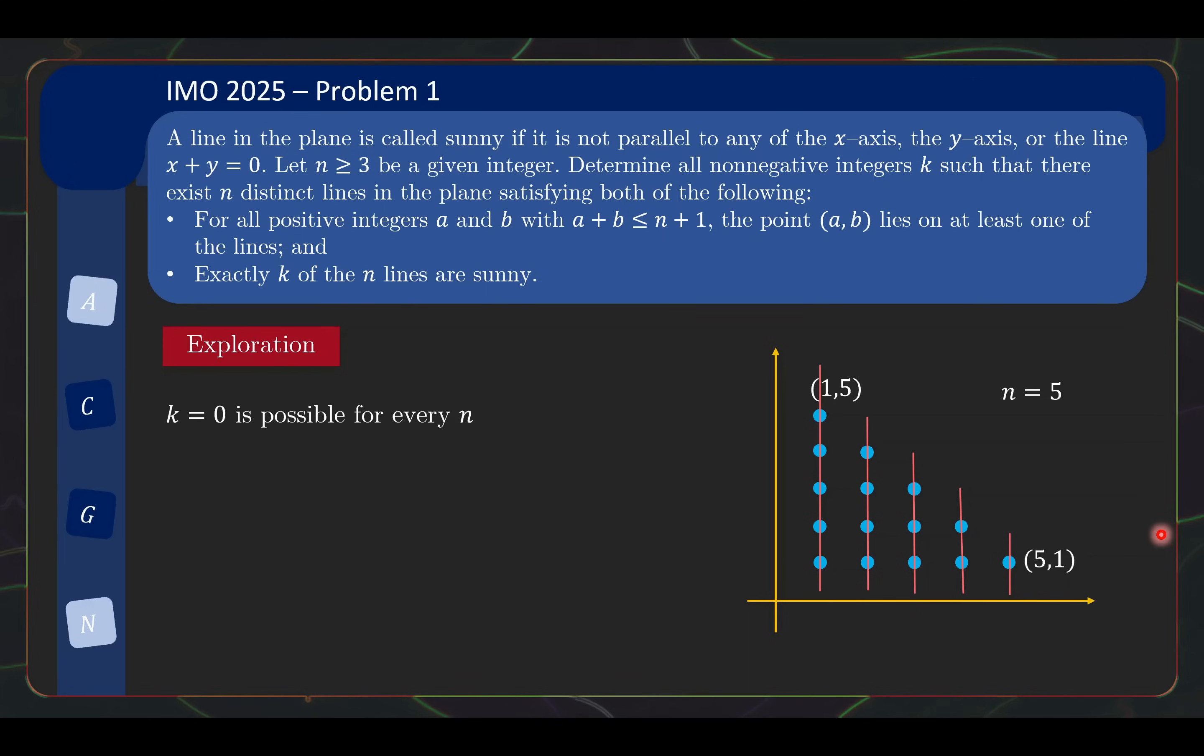Okay, we can show that k equals to 0 works. Can we construct k equals to 1? Again, it's actually quite easy because we take the previous construction. You notice that the last line over here, I can actually rotate to any other angle that is not horizontal, vertical or slope minus 1. Then it will become a sunny line. So for every n, we can again construct a covering such that we use one sunny line.